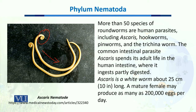The common intestinal parasite Ascaris spends its adult life in the human intestine, where it ingests partly digested food. Ascaris is a white worm, as you can see in the diagram, and it can be about 25 centimeters long. The mature female can produce as many as 200,000 eggs per day.